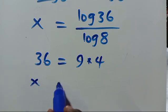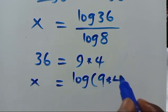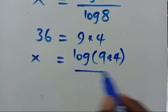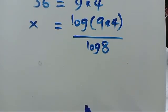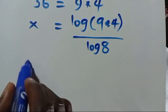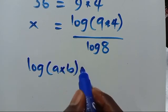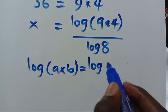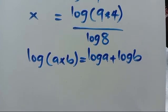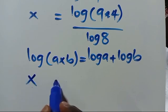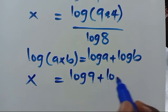So X equals log(9 × 4) over log 8. We recall the product rule: log(A × B) equals log A plus log B. So from here we have X equals (log 9 + log 4) over log 8.